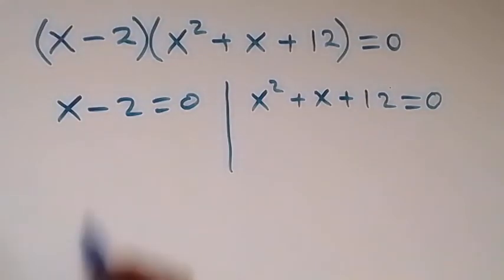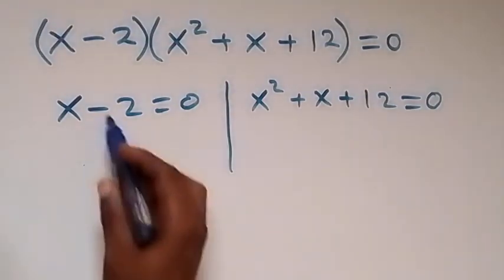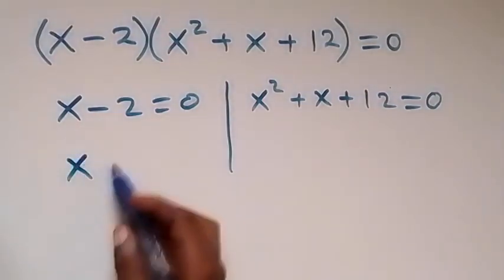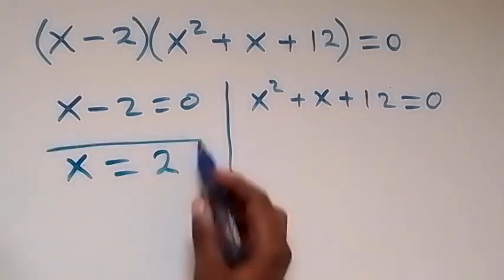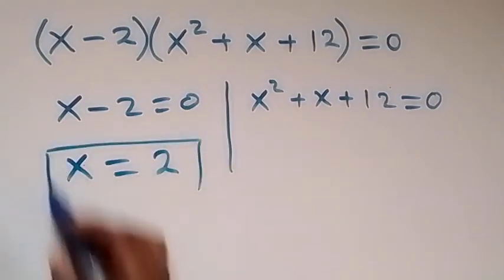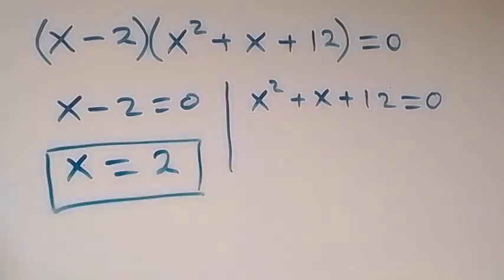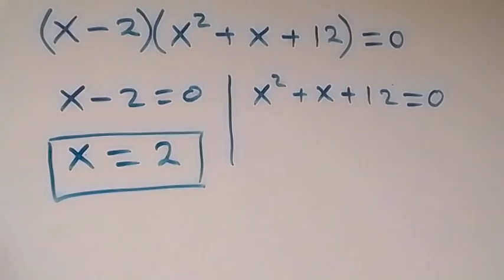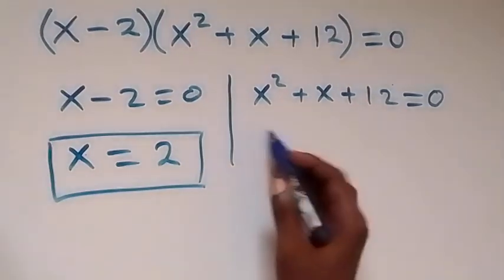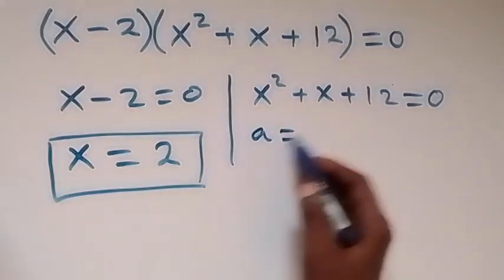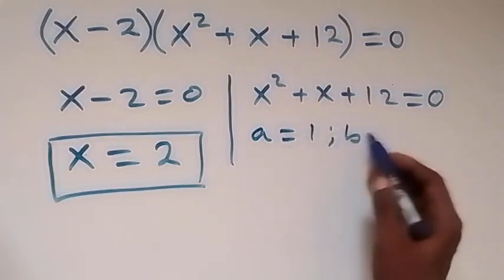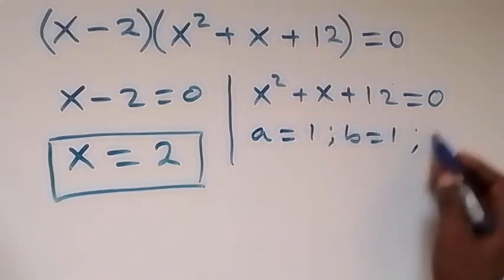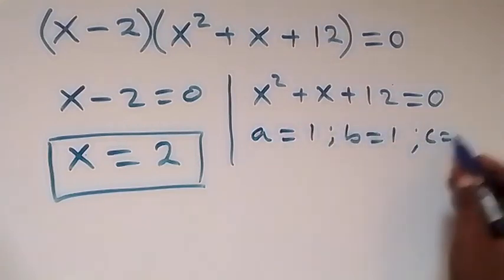From x minus 2 equals 0, we get x equals to 2, which is a real solution. For the quadratic equation, we identify a equals 1, b equals 1, and c equals 12.